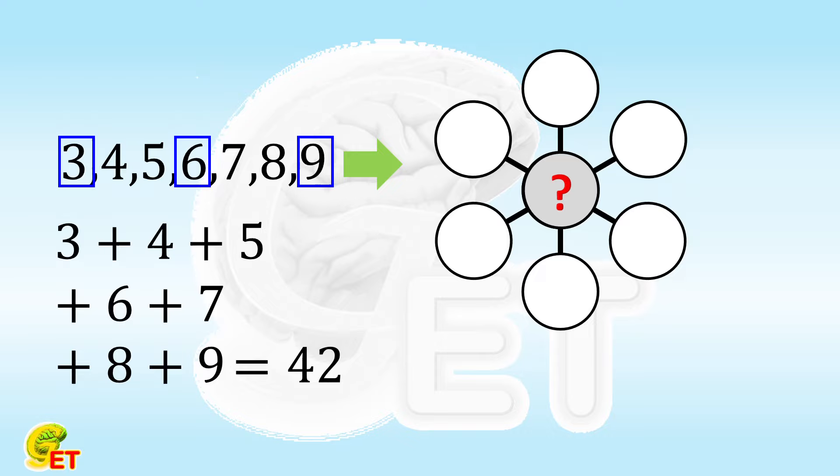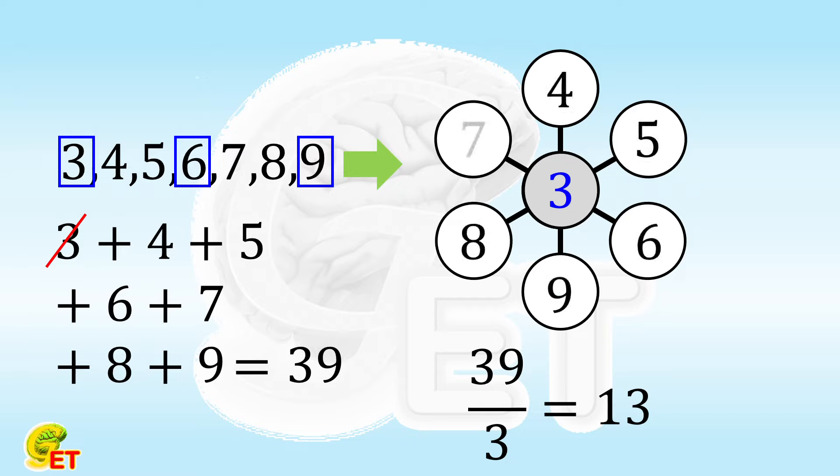If the number in the middle is 3, 42 minus 3 equals 39. 39 divided into 3 parts gives each part as 13. So the opposite of 4 is 9, the opposite of 5 is 8, and the opposite of 6 is 7.